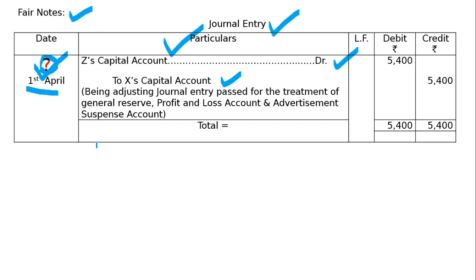After subtracting, the figure 54,400 is written. This means that in the balance sheet, all three items — General Reserve on the liability side, Profit and Loss Account with a credit balance, and Advertisement Suspense Account with a debit balance of 12,000 — will appear because we have already passed the adjustment entry.